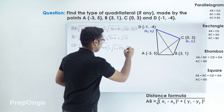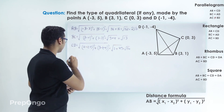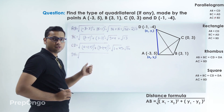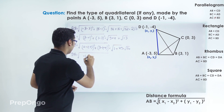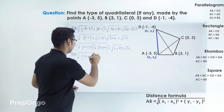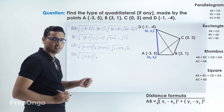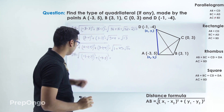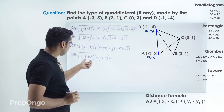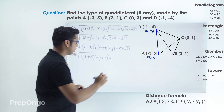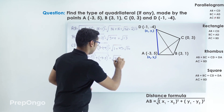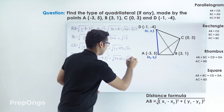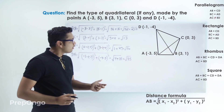Finally, let's calculate DA. Putting the values: (minus 1 minus minus 3) squared plus (minus 4 minus 5) squared. This gives 2 squared plus (minus 9) squared, which is 4 plus 81, so DA equals root 85. Now if you observe all four lengths — 2 root 13, root 13, root 50, and root 85 — none of them are equal.